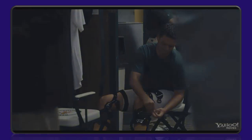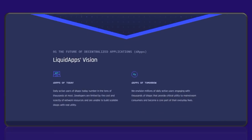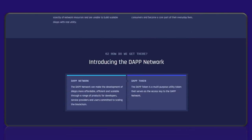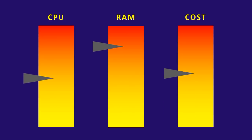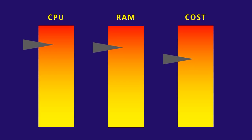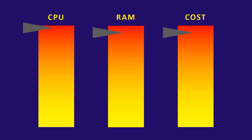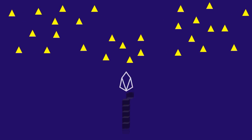Every once in a while the EOS universe is going to go through similar disruptions, and this is one of those times. On January 24th, a new project was announced called Liquid Apps. The purpose of Liquid Apps is to address the scalability issues that the EOS mainnet has been experiencing lately. CPU and RAM are limited, scarce resources on any given EOSIO chain, and the cost of running an application on top of the EOS mainnet has become prohibitively high for many development teams, so some dApp teams have begun looking elsewhere.